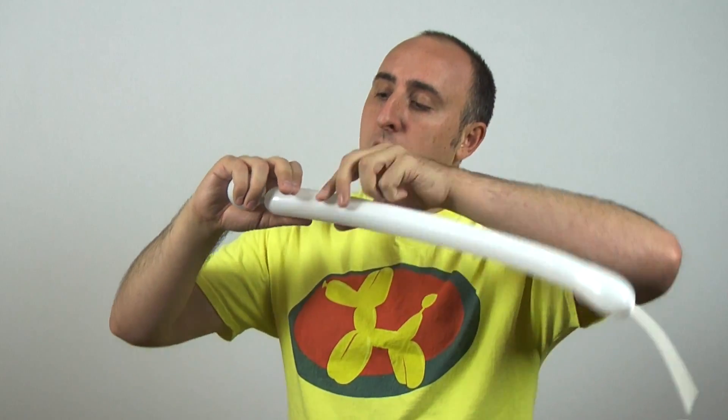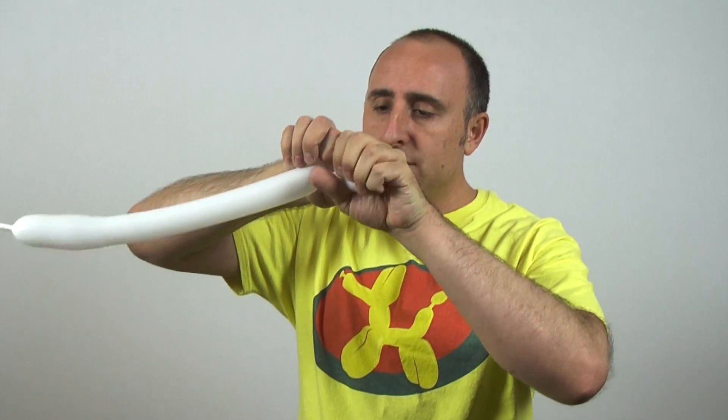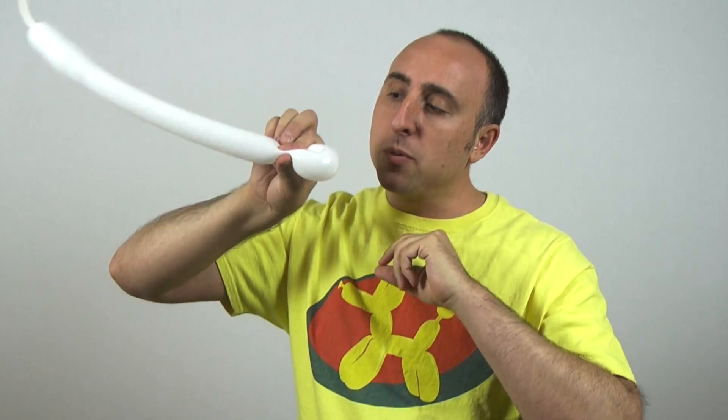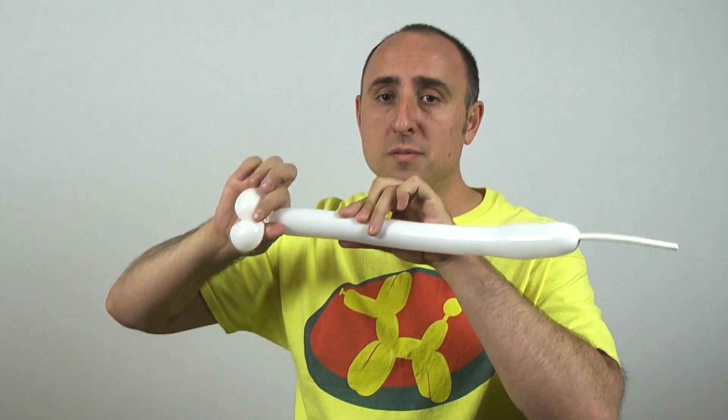To make the rest of the flower petals, fold the balloon over just like you did with the first one. You're going to want to squeeze it. I can now pinch it with my free fingers and twist it. Then I move the balloon over, and now I move those two to the inside of my palm. And you just keep repeating that. I normally do six flower petals, but you can use however many you like. So far I have two, so I need four more.